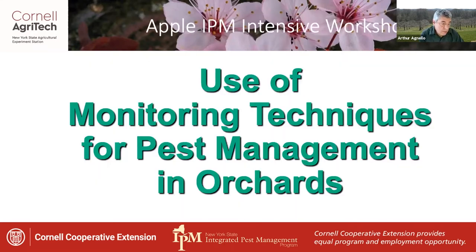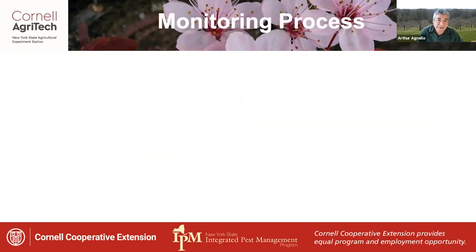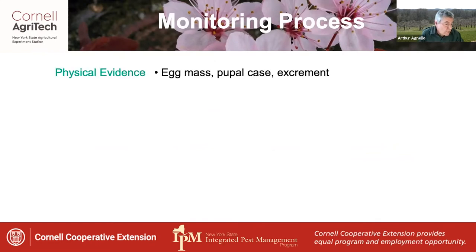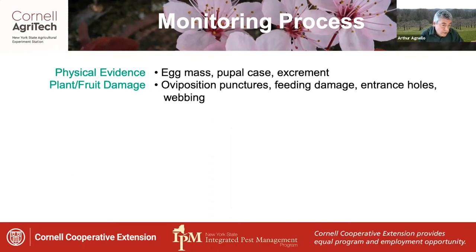Moving on now to monitoring, which is a basic component of all pest management system programs. One way of looking at monitoring is as a way of keeping an eye on what's going on in the orchard. You can monitor for physical evidence, which includes items such as an egg mass, a pupal case, or insect excrement such as caterpillar frass or white apple leafhopper specs. You can also monitor for damage to either the plant or the fruit — this is like the smoking gun — and can include oviposition punctures, feeding damage to fruit or foliage, entrance holes, or even webbing.